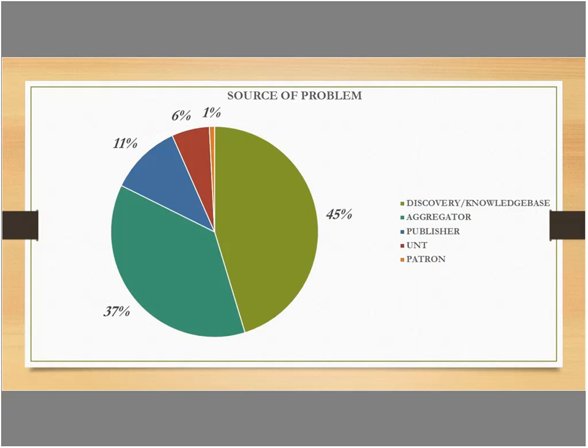We also break down statistics by who we determined caused the error. We have five basic categories. The highest percentage is the discovery service/knowledge base combined—but those errors don't even make up half of the problems we encounter. This percentage is based off actual problems, not including the 'no problems.' Less than half are caused by the discovery product, which kind of flies in the face of our liaisons assuming all problems were Summon's fault. The next highest is aggregators at nearly 37%, followed by publishers, UNT itself—which basically means me—and then patrons.